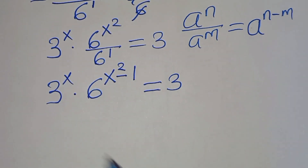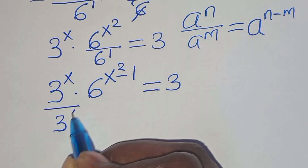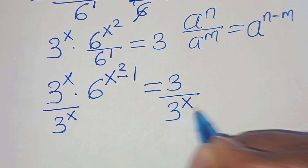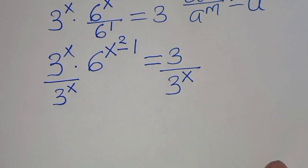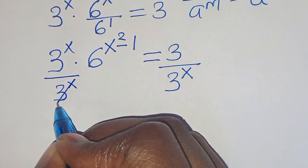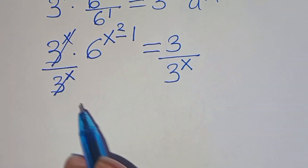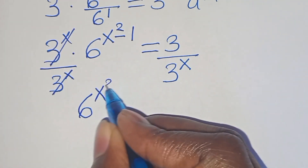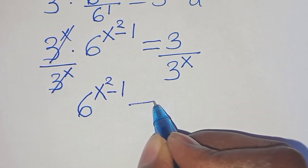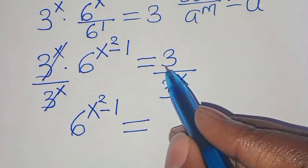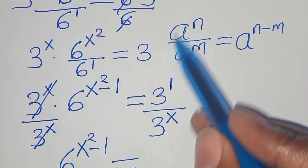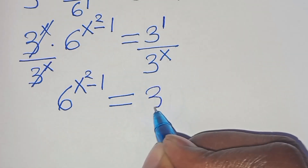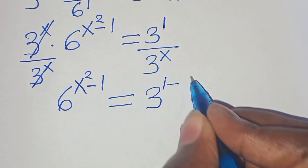The next step is to divide both sides by 3 to the power of x. So 3 to the power of x simplifies on the left-hand side, so that now we have 6 to the power of x squared minus 1 equal to 3 raised to the power of 1 minus x, applying this exponent property.